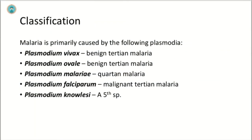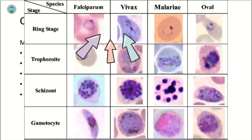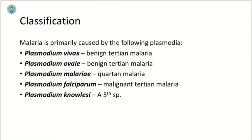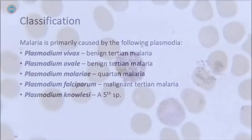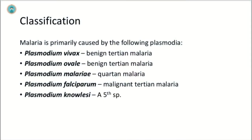Malaria is primarily caused by four plasmodia: Plasmodium vivax, Plasmodium ovale, Plasmodium malariae, and Plasmodium falciparum. P. vivax and P. falciparum are the most common causes. P. vivax is most widely distributed, while P. falciparum causes the most serious disease. A fifth species, Plasmodium knowlesi, is found in Southeast Asia and is also responsible for causing malaria. Worldwide, malaria is one of the most common infectious diseases and one of the leading causes of death.